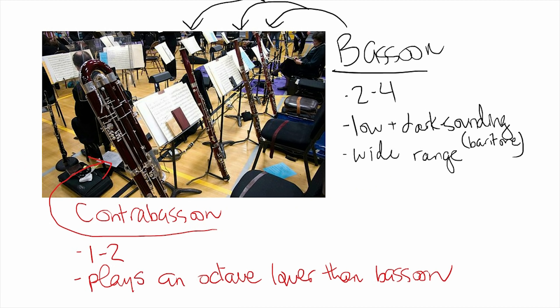Then we have our lowest woodwind instruments in the orchestra. The bassoon is a very dark-sounding instrument that almost always plays pretty low parts, though like the clarinet it has a fairly wide range. The bassoon can be compared to the male baritone voice, and there are two to four in the orchestra. Then we have the contrabassoon — I wanted to show the size comparison here; they're pretty gigantic. There are one to two of these in the orchestra, and they play the same part as a bassoon but an octave lower, so it sounds very, very low.